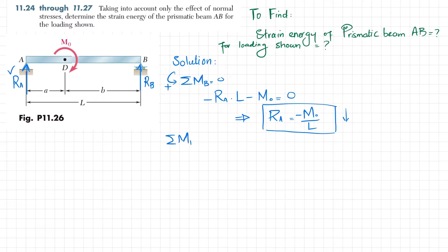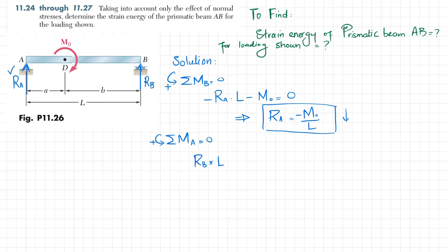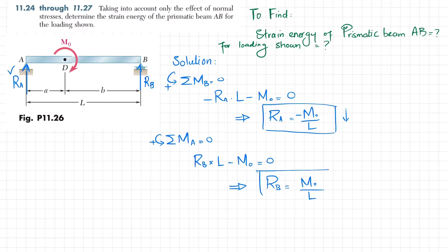Now we apply the second equilibrium condition: sum of all moments about point A equal to zero, taking counterclockwise as positive. About point A, the moment due to R_B with perpendicular distance L is counterclockwise (positive), and the external moment M0 at D is clockwise (negative). Their sum equals zero, giving R_B equals M0 over L. Since R_B is positive, our assumed upward direction is correct.